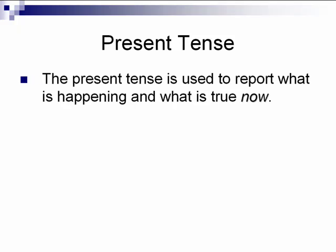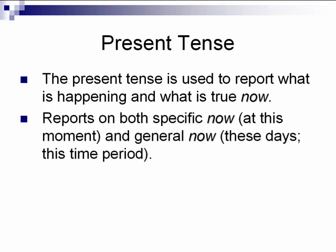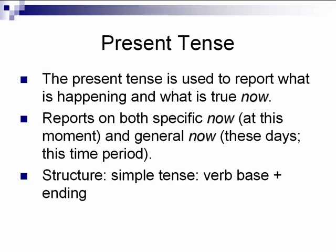The present tense is used to report what is happening and what is true now. It reports on both specific now and general now. The structure is verb base plus the ending.